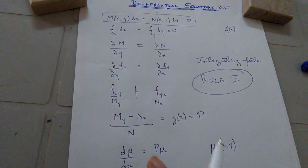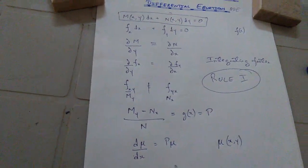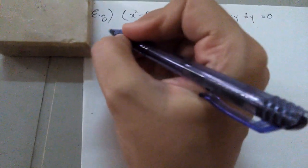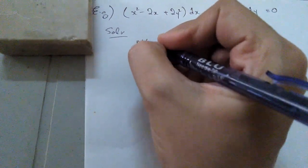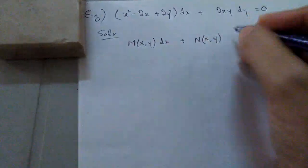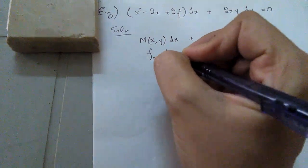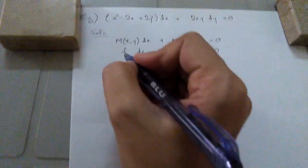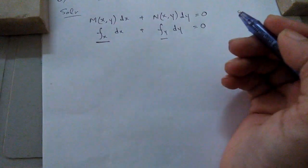In order to go more deeply, let us work through an example. We are given a differential equation that looks exact, but we cannot confirm this without checking. This is your M(x,y) dx and N(x,y) dy. Is this really f sub x and f sub y? We have to check this out.